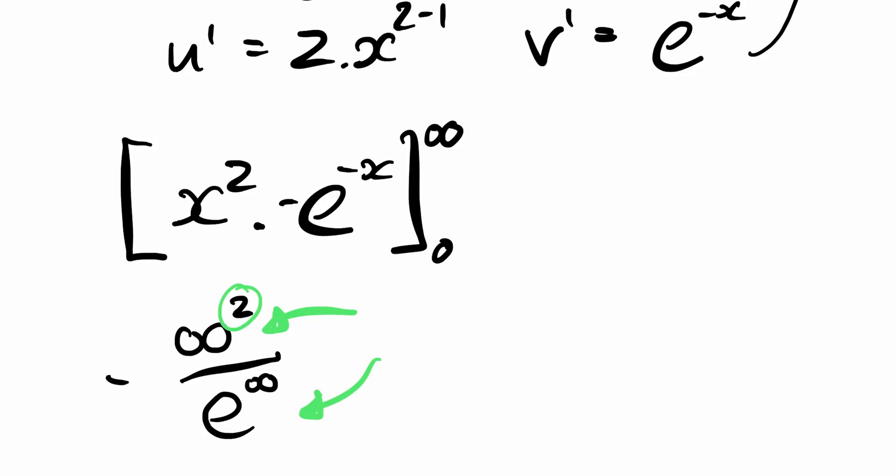So which one of those two is bigger? And this is the philosophical puzzle for everyone. Infinity to the power of something compared to something to the power of infinity, which is bigger. Turns out it's the bottom one, or at least that gets bigger faster. And so we can say this thing actually tends to zero.